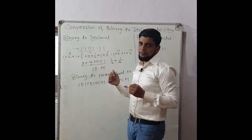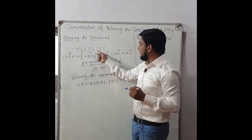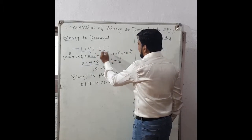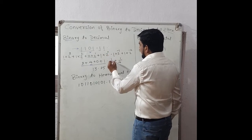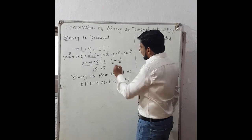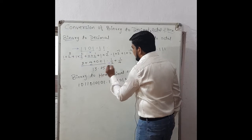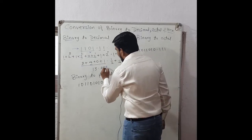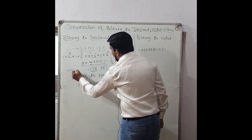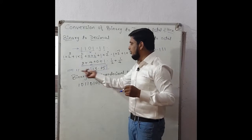13 is the decimal equivalent of binary 1101. For the fractional part 0.11: 1 into 2 raise to minus 1 is 1 by 2, and 1 into 2 raise to minus 2 is 1 by 4. So 1/2 is 0.5 and 1/4 is 0.25, giving 0.5 plus 0.25 equals 0.75. Therefore 13.75 is the decimal equivalent of binary 1101.11.